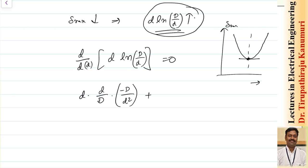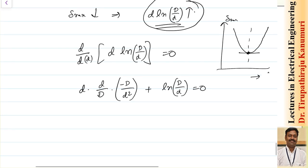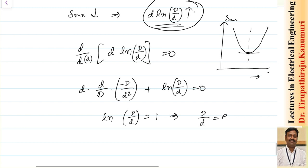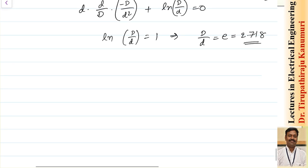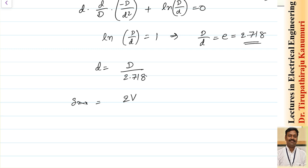From D/d = e = 2.718, the optimal conductor diameter is d = D/2.718. Substituting back, ln(D/d) = 1, so the maximum gradient under this condition becomes g_max = 2V/d, in kV/cm. Let this be equation number 8.